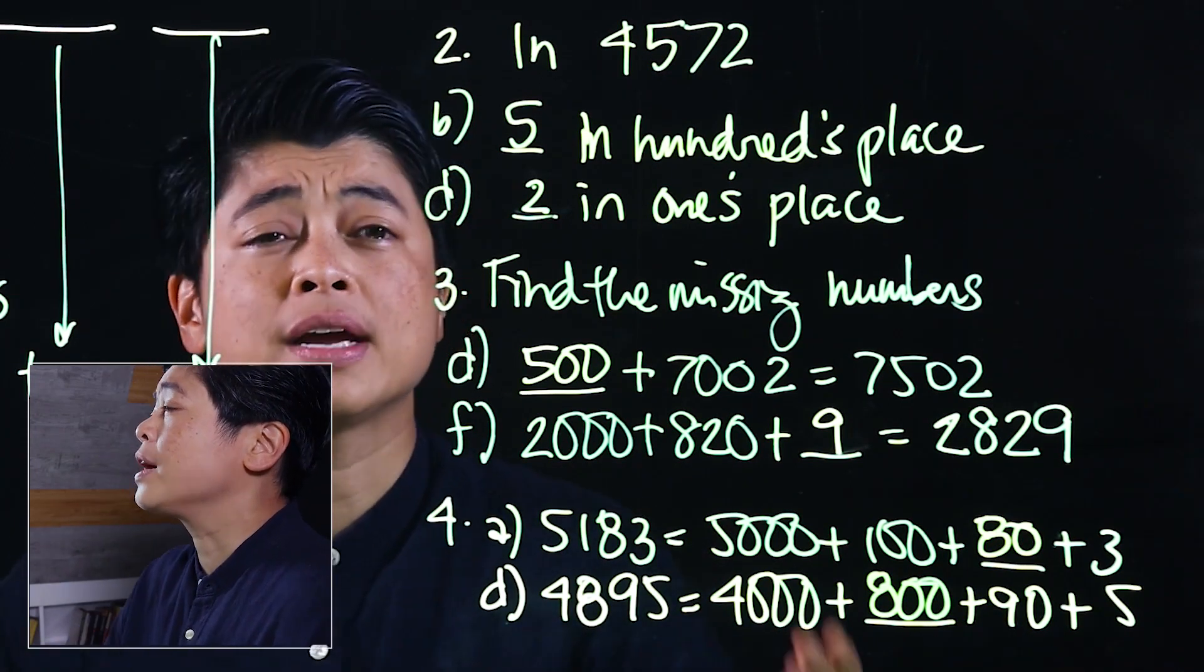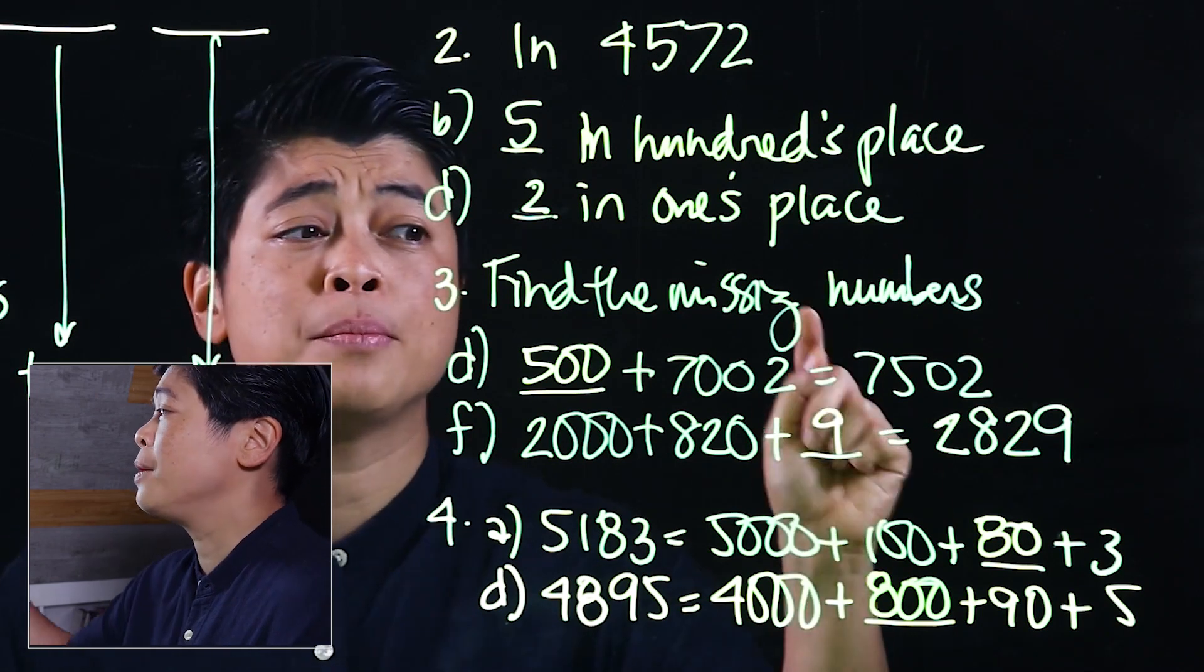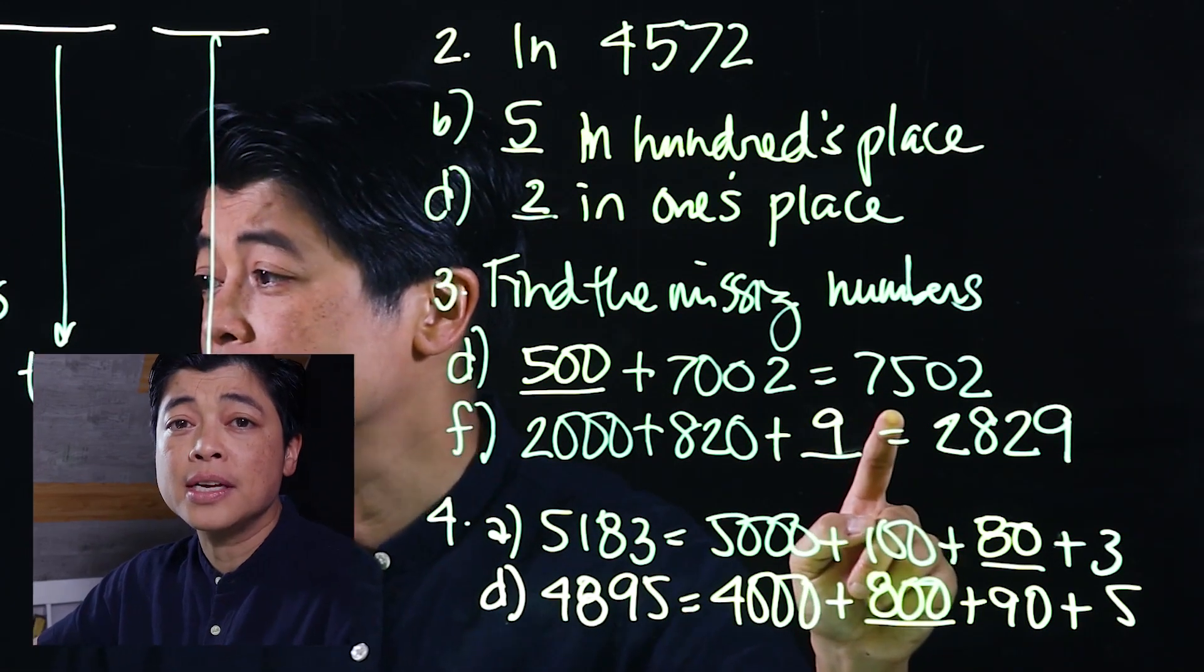When we teach this to our kids, what we want to do is have them read the numbers and then fill in the blanks when they see what's missing already. If the full number is on the left side, they start reading from the left and fill out the right. But if the full number is on the right side, we start with the right and then have them read it and fill out what's missing on the left side.